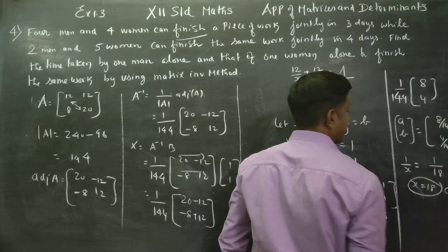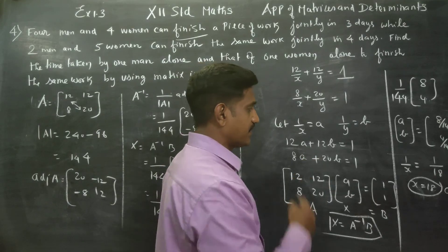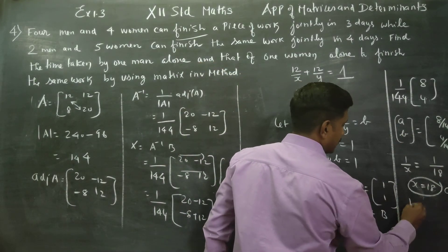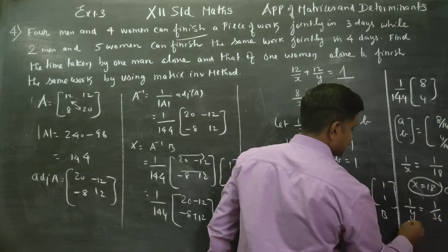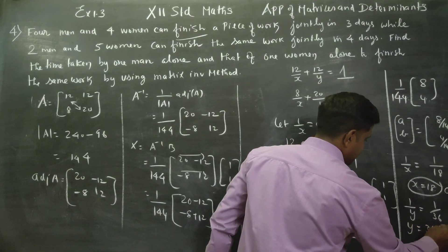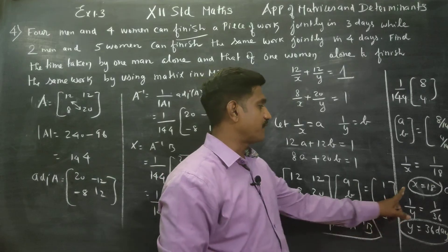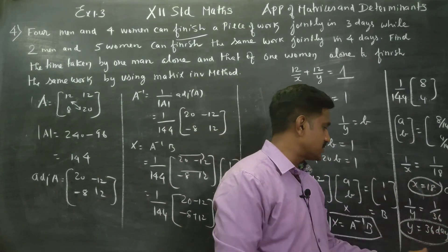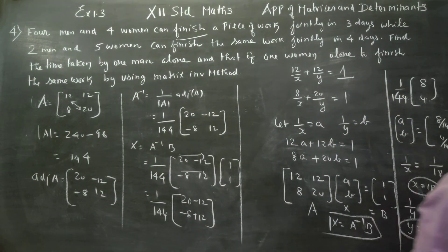X is equal to 18 days — that is the number of days taken by 1 man to finish the work. And 1 by y equals 4 by 144, which simplifies to 1 by 36, so y equals 36 days. Therefore, the number of days taken by 1 man to complete the job is 18 days, and the number of days taken by 1 woman to complete the job is 36 days. Thank you.